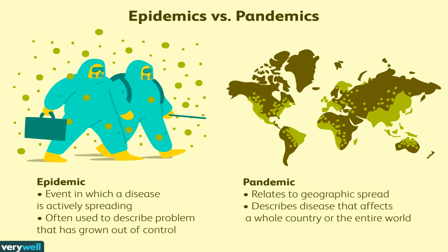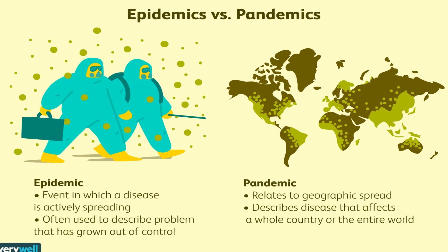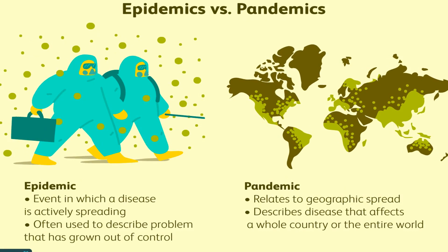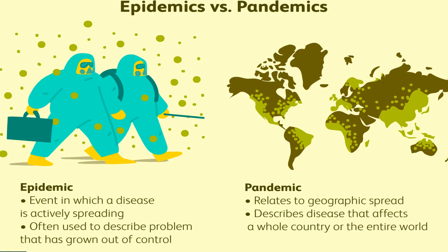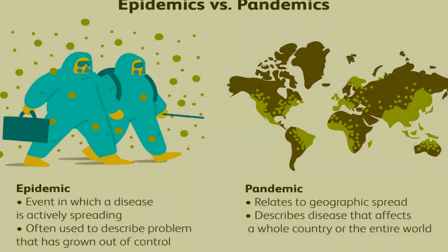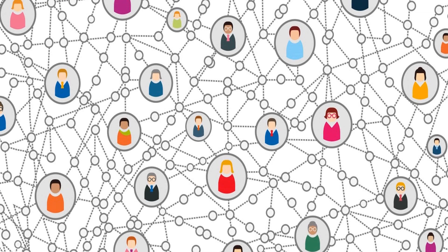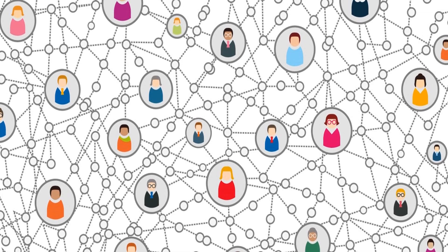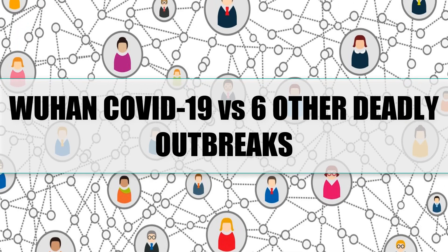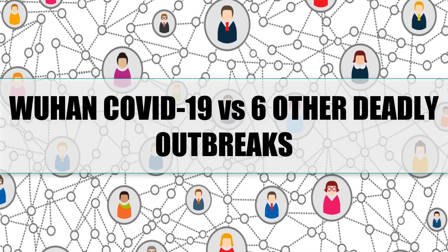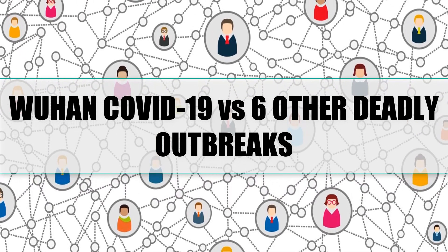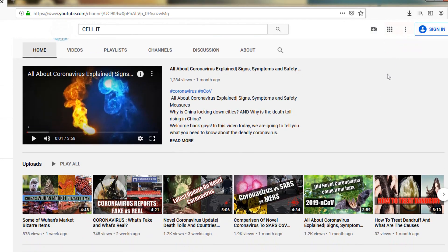The actual meaning of the word epidemic means 'upon or above people.' Welcome back guys. In today's video we are going to give you a comparison of the recent coronavirus outbreak to six other deadly outbreaks.